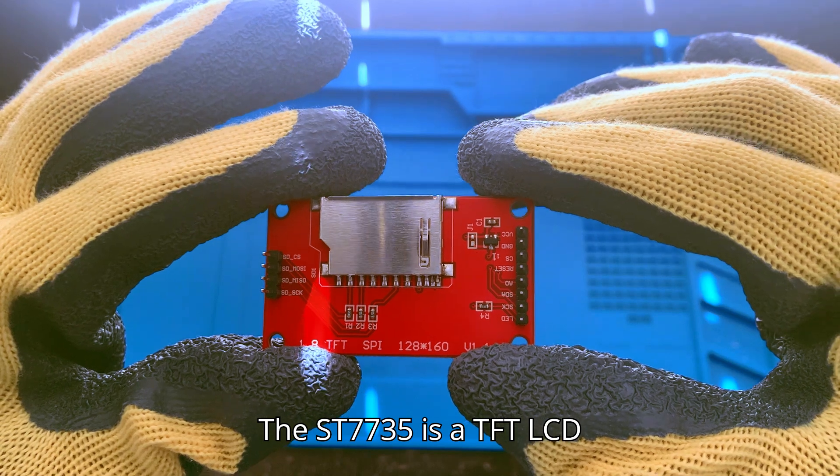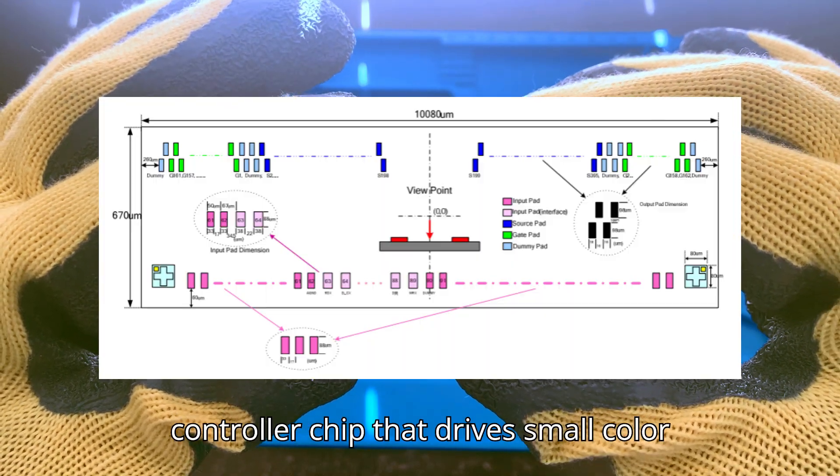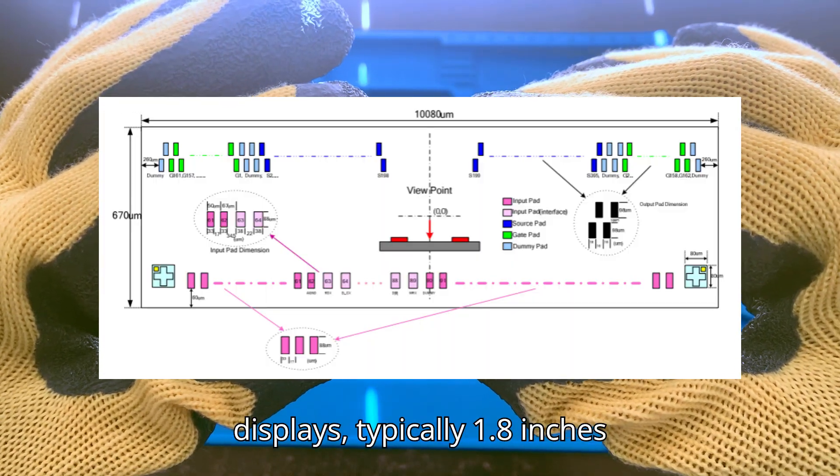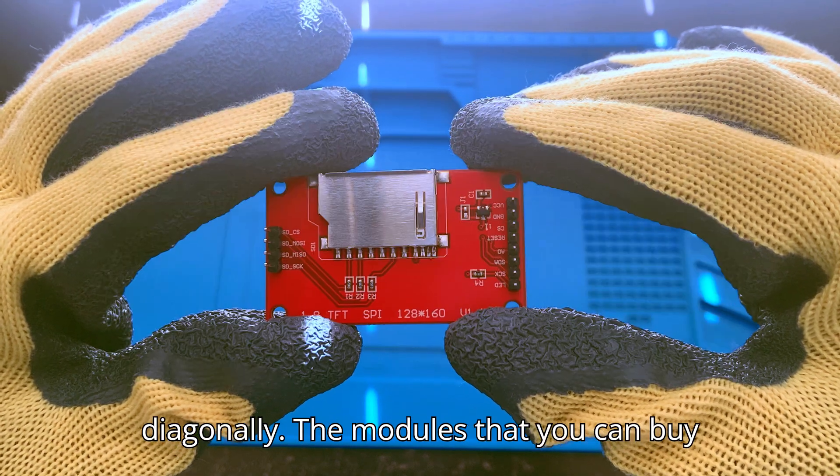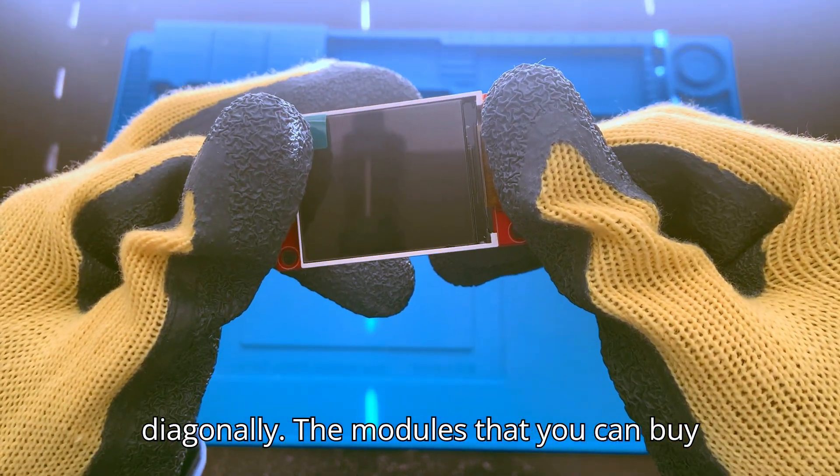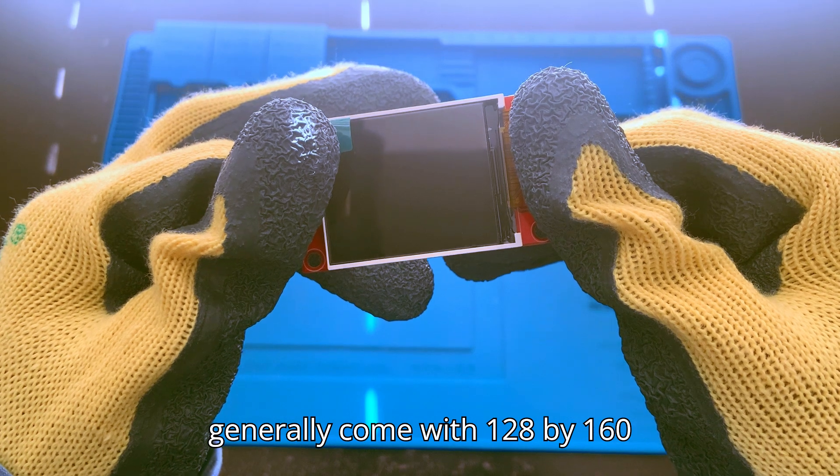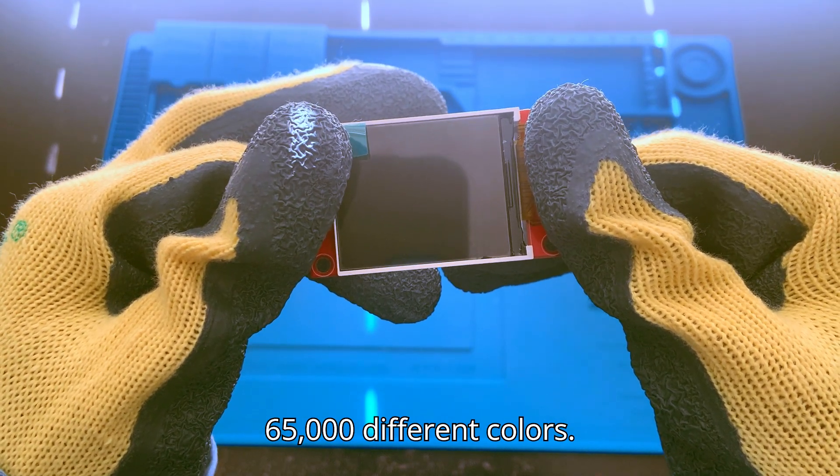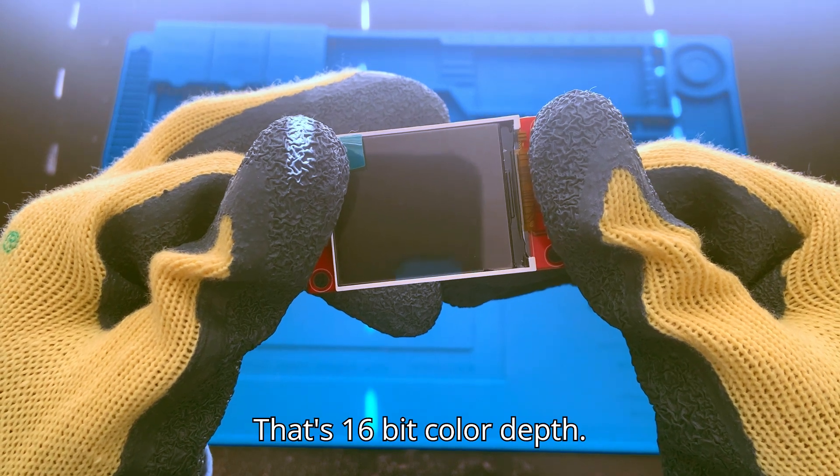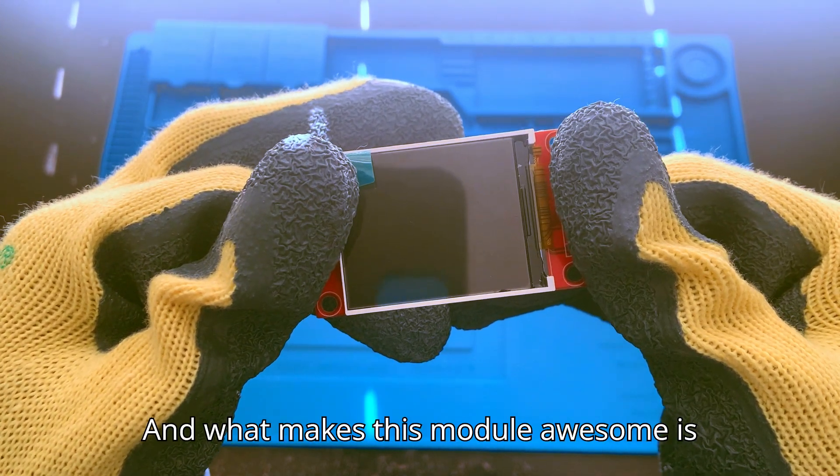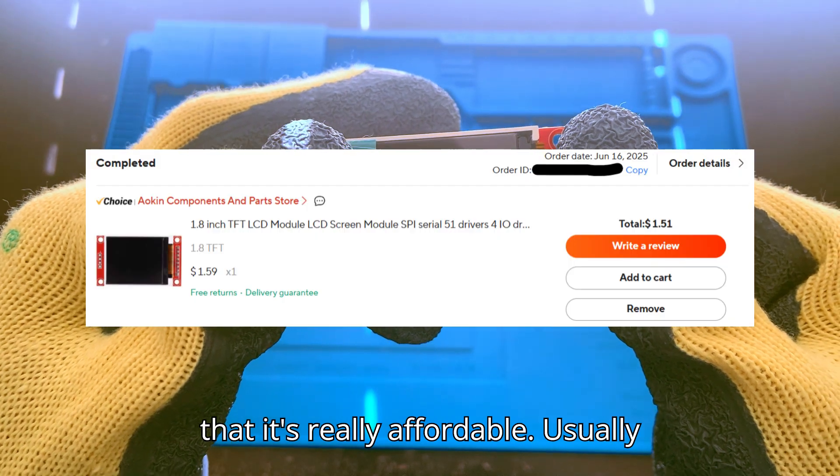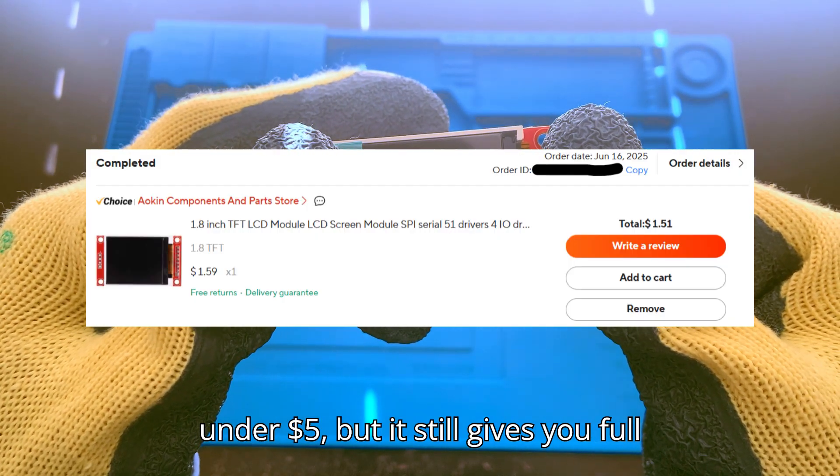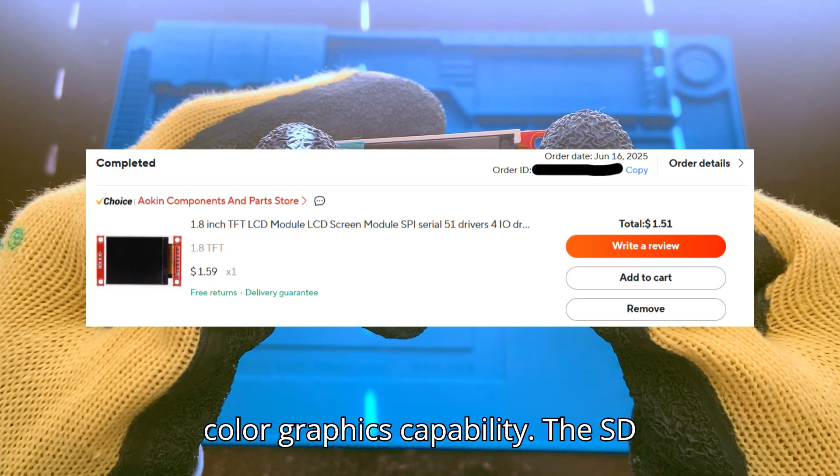The ST7735 is a TFT LCD controller chip that drives small color displays, typically 1.8 inches diagonally. The modules generally come with 128 by 160 pixel displays that can show 65,000 different colors. That's 16-bit color depth. What makes this module awesome is that it's really affordable, usually under $5, but it still gives you full color graphics capability.